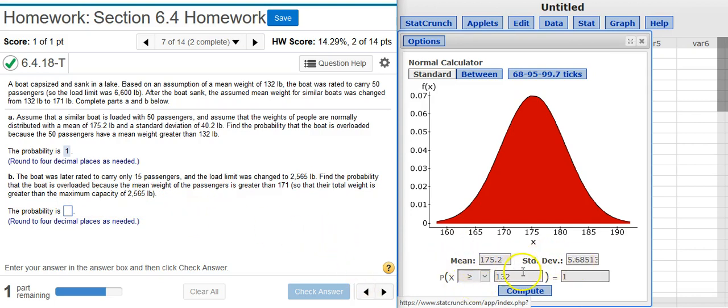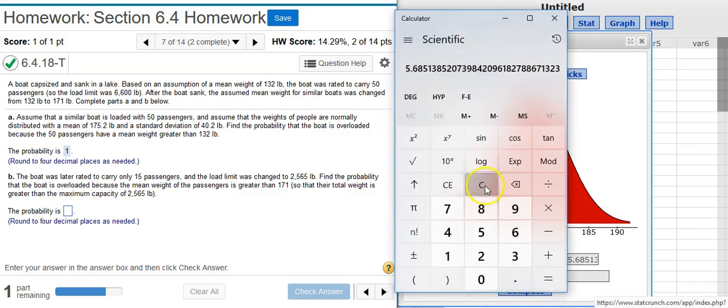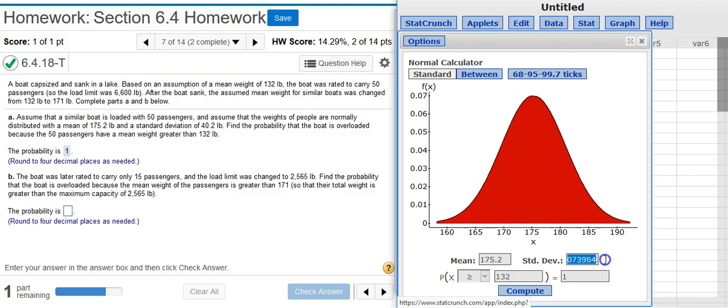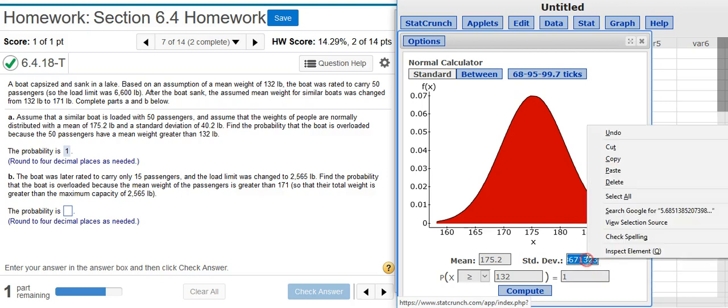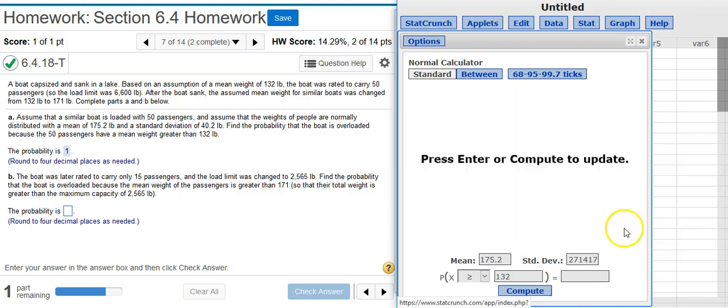I've got the same distribution here. But now, I need to adjust my standard deviation because now I've got 15 passengers instead of 50. So, I'll pull my calculator back up. We're going to take the standard deviation of 40.2. And this time, we're going to divide it by the square root of 15. Copy that in, select the whole number before I paste it in.